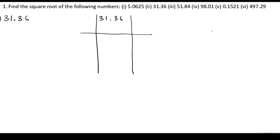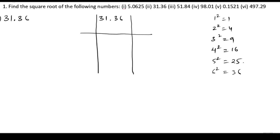We know the squares: 1 squared is 1, 2 squared is 4, 3 squared is 9, 4 squared is 16, 5 squared is 25, 6 squared is 36. So the nearest number to 31 is 25. We write 5 into 5, giving 25. If we subtract 25 from 31, we get 6.